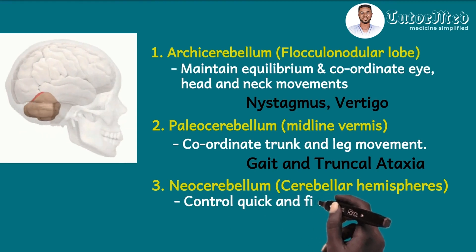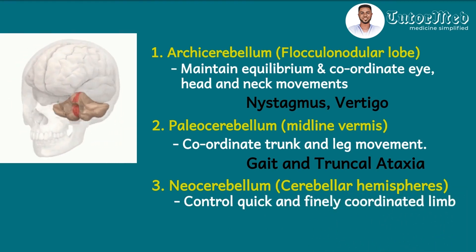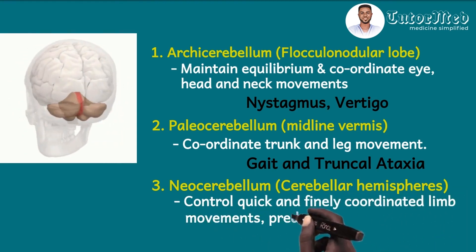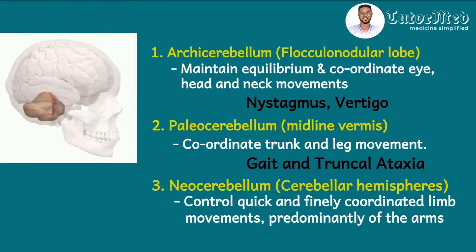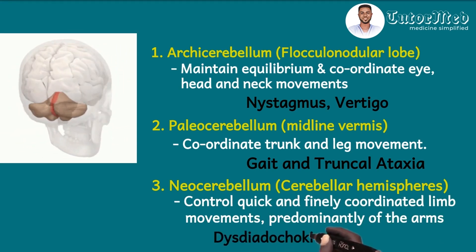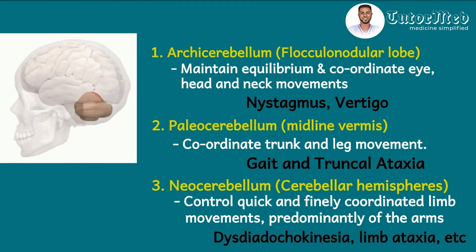Then the last part is the neocerebellum, which is made up of the cerebellar hemispheres. So here we control quickly and finely coordinated limb movements, predominantly of the arms. And so a lesion here will produce desdiadochokinesia, limb ataxia, etc. So if the question is changed and is asked: if this man has nystagmus, which part of the cerebellum is involved? Because you went past the question, you would be able to see that it is the flocculonodular lobe of the cerebellum which has the problem.